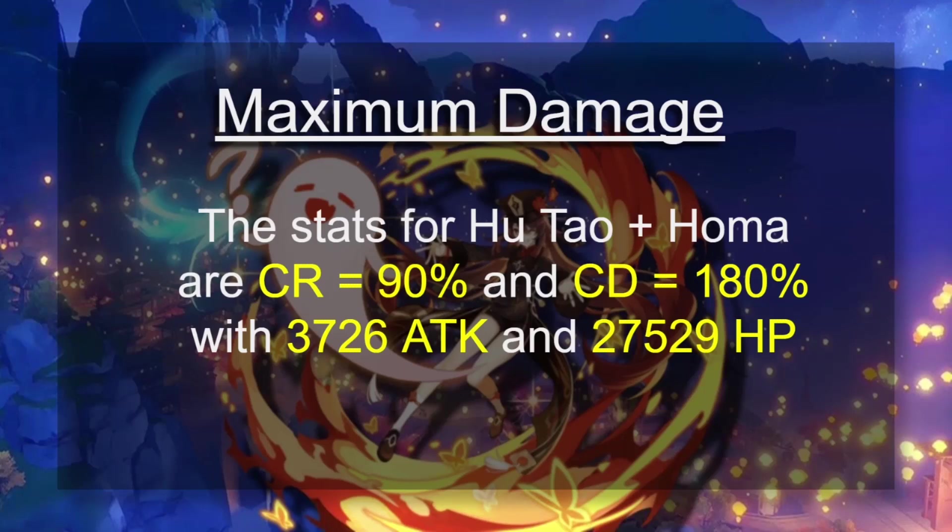So basically, long story short, Hu Tao doesn't need any HP substats except her main stat artifact. You want that to be HP, and then you want all of your substats to be crit rate and crit damage.